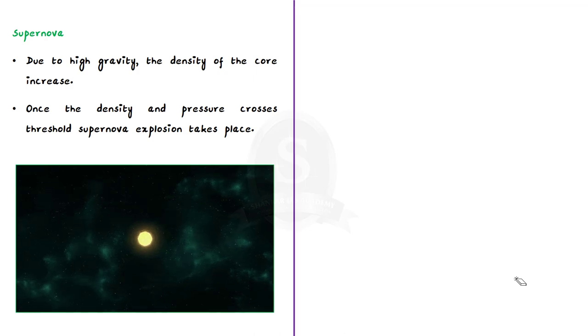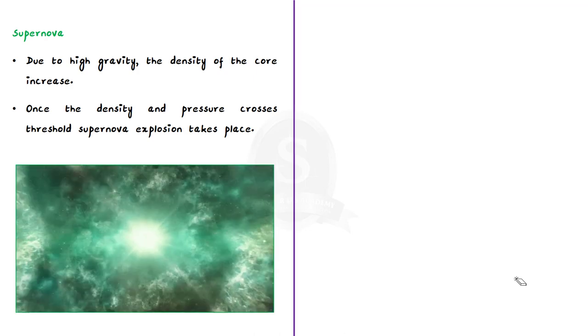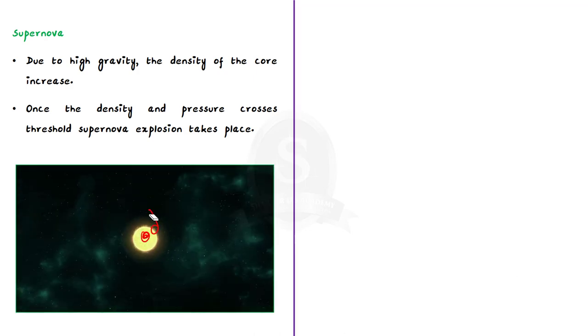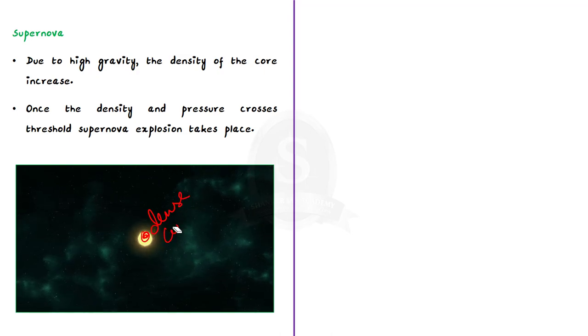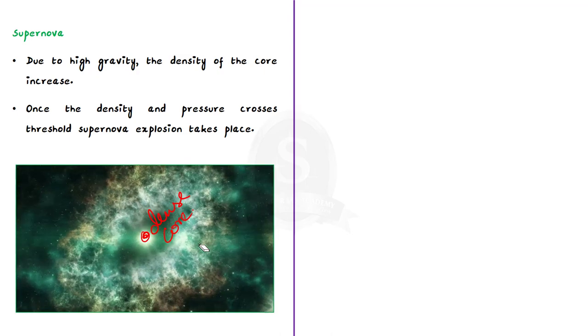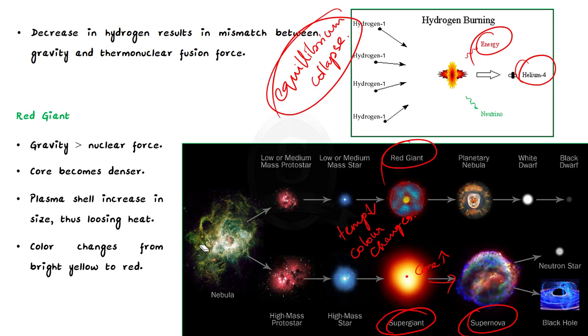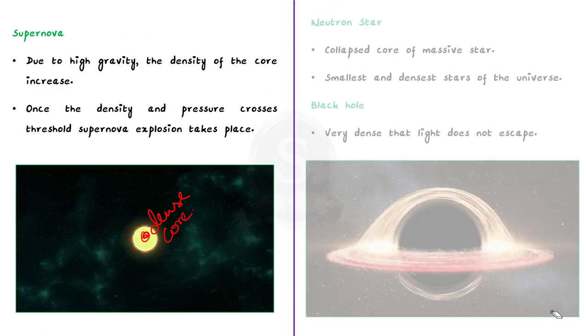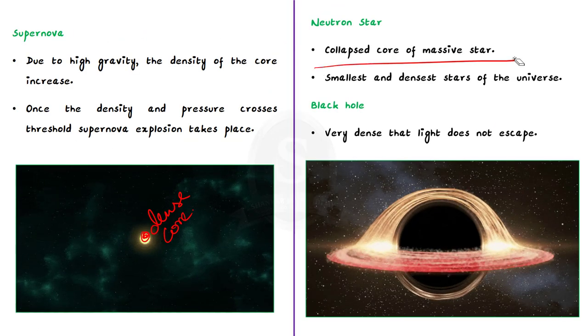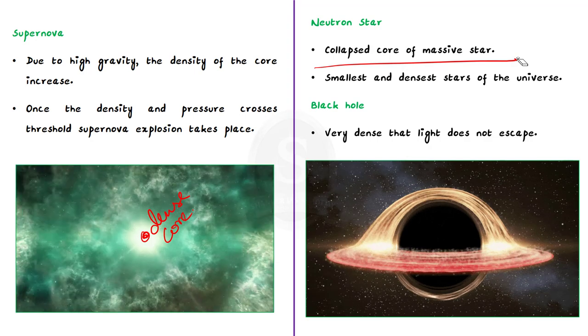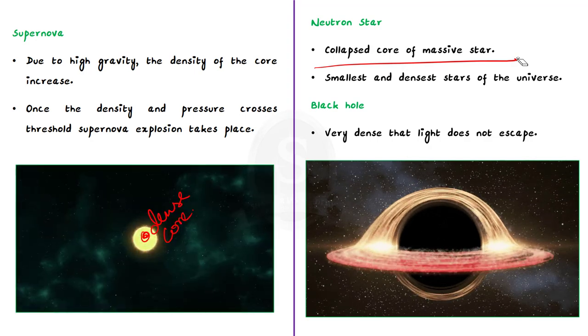After a core collapse supernova, all that remains is a dense core. When massive stars undergo supernova explosions, they either turn into a black hole or an ultra-dense neutron star. Now coming back to the question, what is a neutron star? Basically, a neutron star is the collapsed core of a massive star.